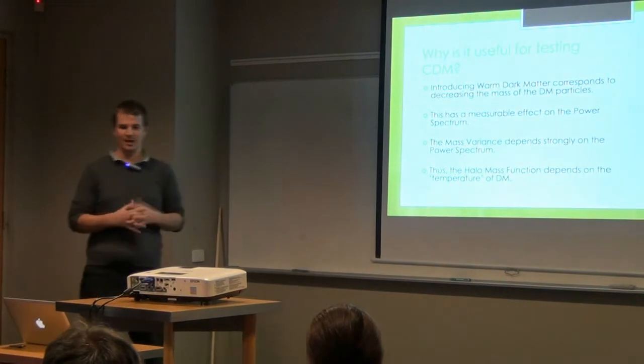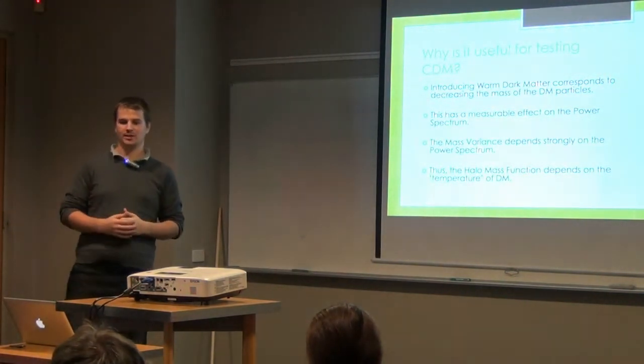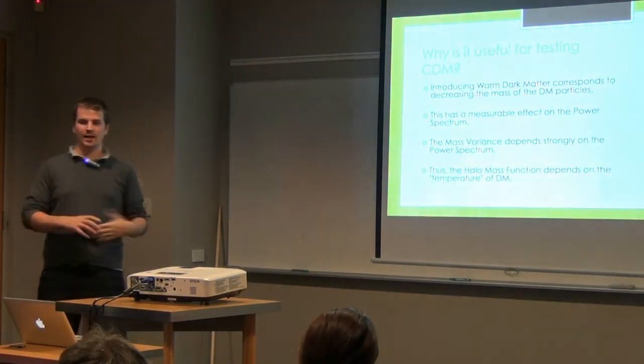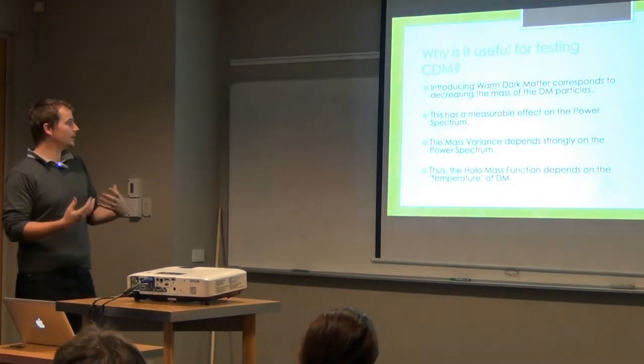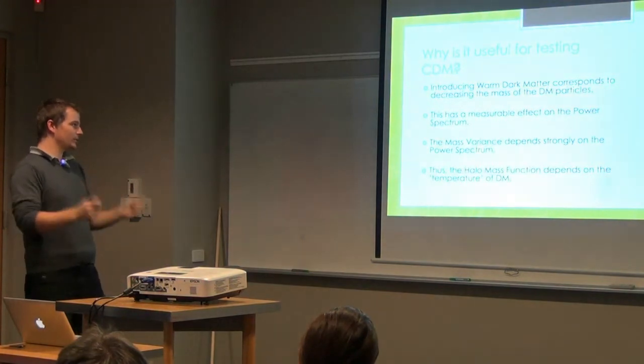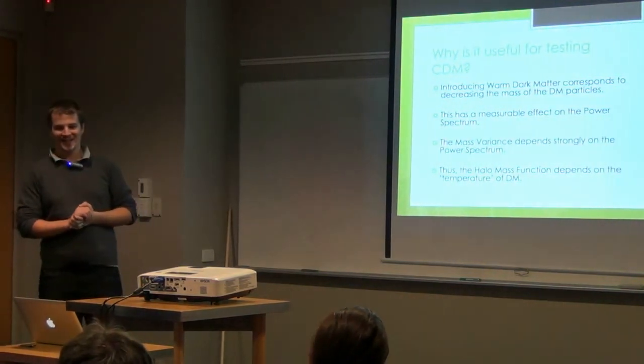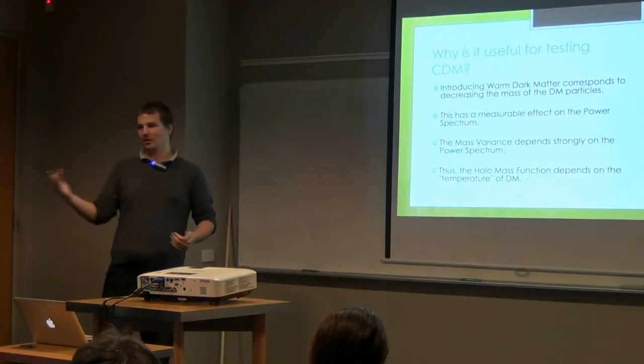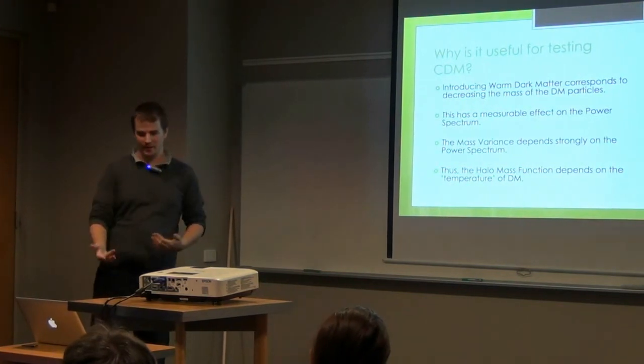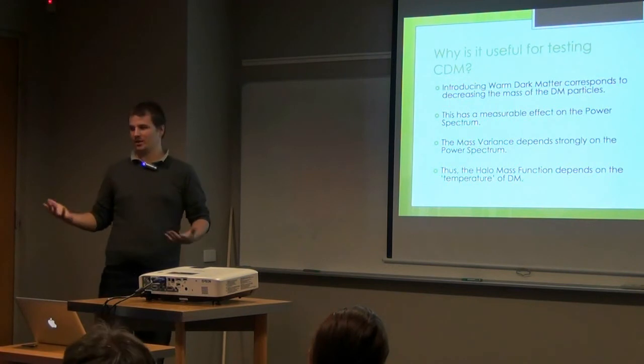So why is it useful for testing cold dark matter? Introducing warm dark matter corresponds to decreasing the mass of the dark matter particles. They move around more quickly but have smaller mass than the corresponding cold dark matter particles. So this has a measurable effect on the power spectrum. The mass variance depends strongly on the power spectrum, and therefore since the halo mass function depends on the mass variance, the halo mass function inevitably depends on the temperature of dark matter.